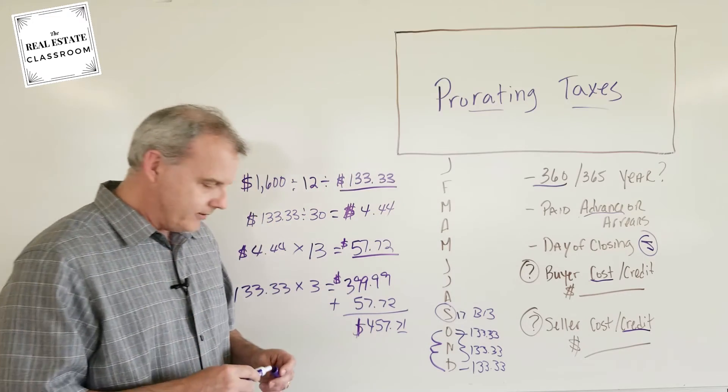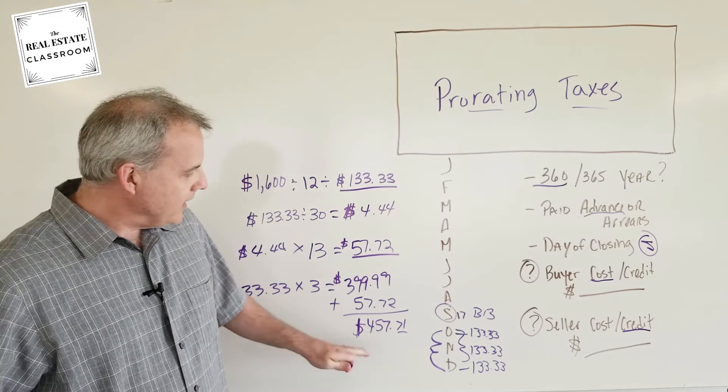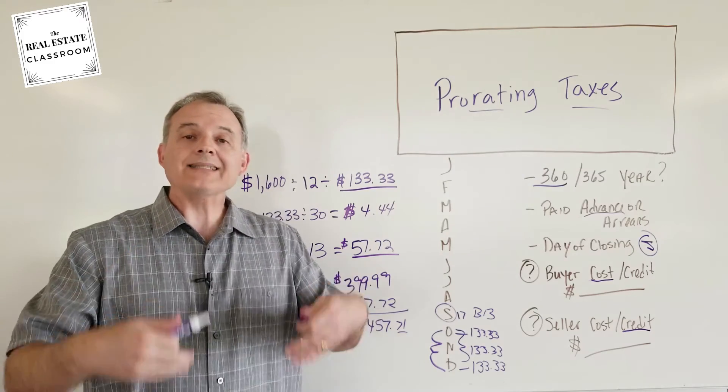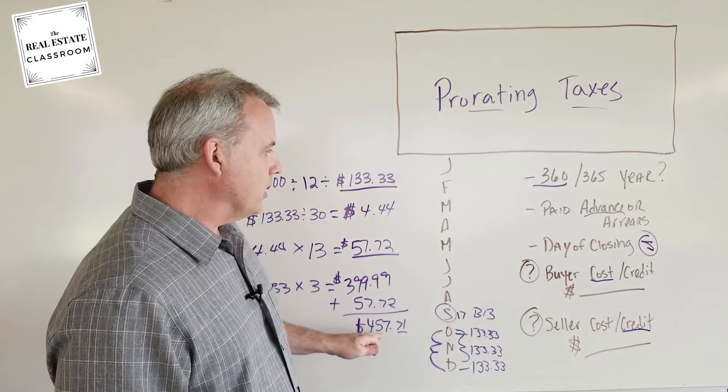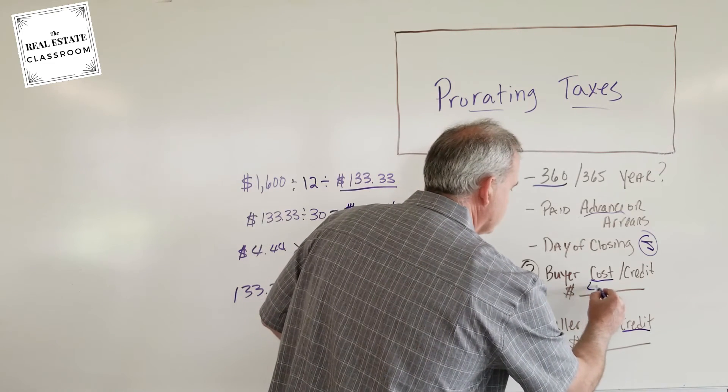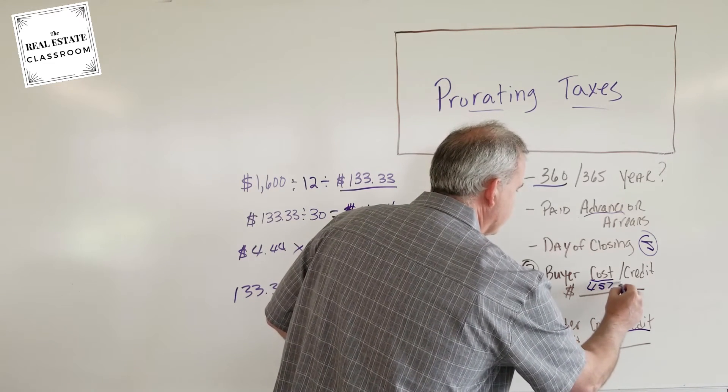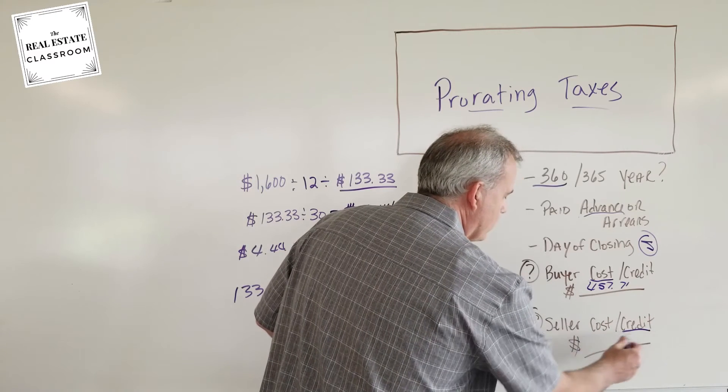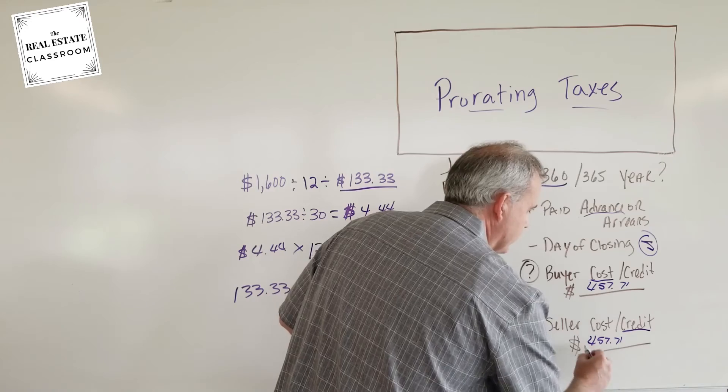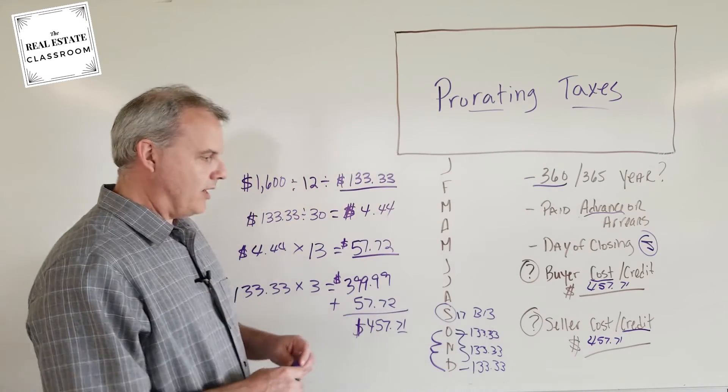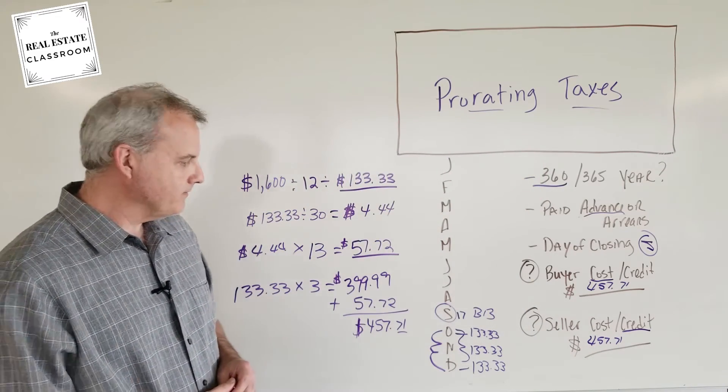I'm pretty sure I did the math right there. So what's going to happen, or the correct answer to this question is, the buyer, the cost to the buyer is $457.71, and the credit to the seller is $457.71. So that would be the correct answer.